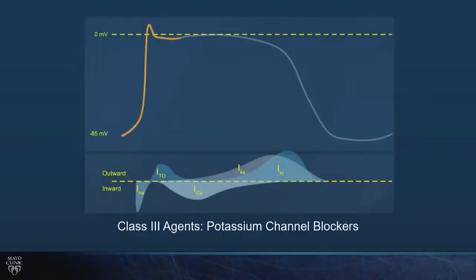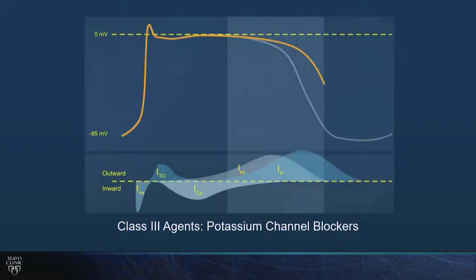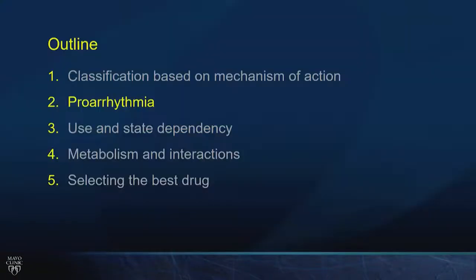Class 3 agents don't affect phase 0 but do affect potassium channels — in particular the IKR channel — just like having long QT2. They result in QT prolongation, which can set up for proarrhythmia with torsade.